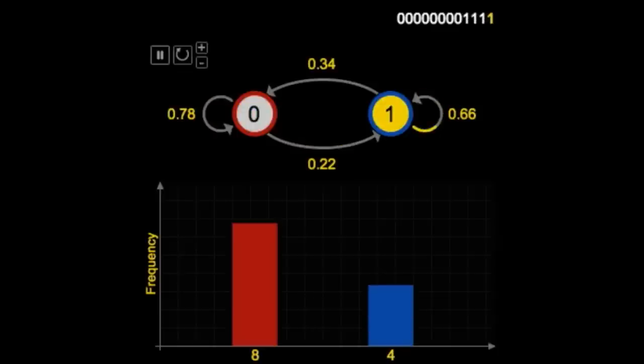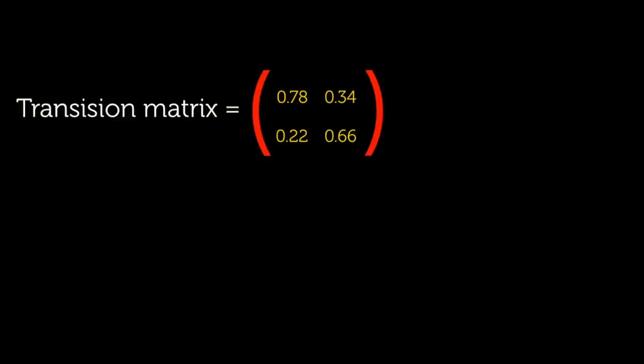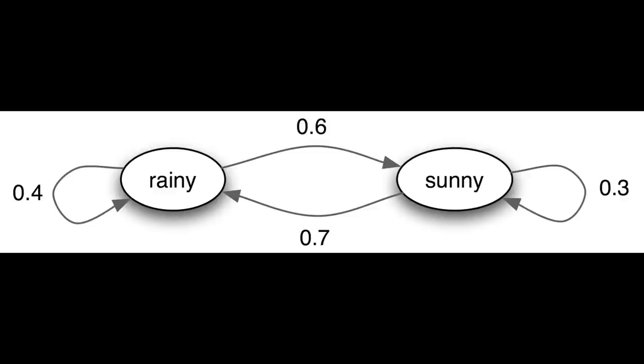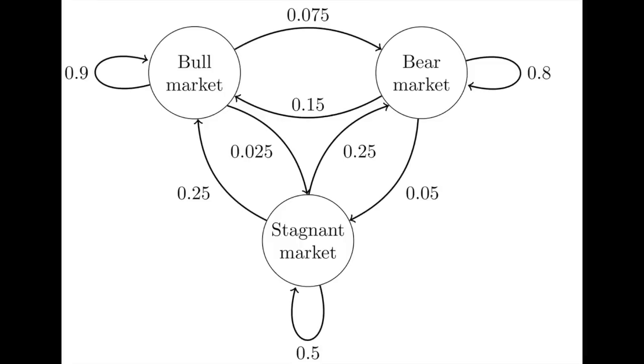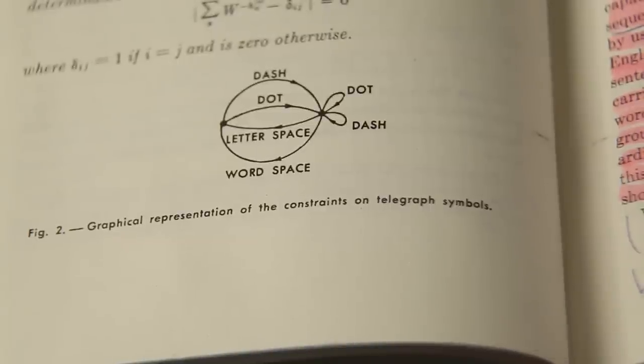But the concept of modeling sequences of random events using states and transitions between states became known as a Markov chain. And one of the first and most famous applications of Markov chains was published by Claude Shannon.